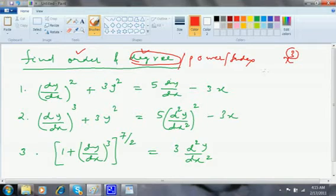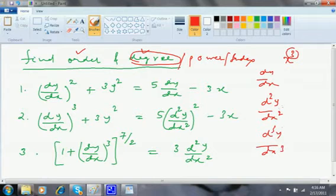Order is when I'm doing dy/dx, d²y/dx², d³y/dx³ and so on. This is called first differentiation, second order differentiation, third order differentiation. So how to get the order and degree? It's very easy.